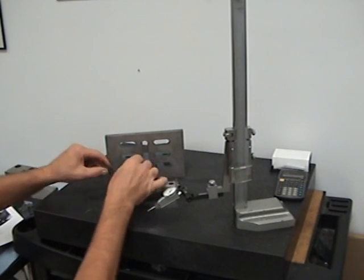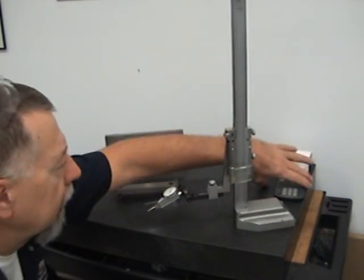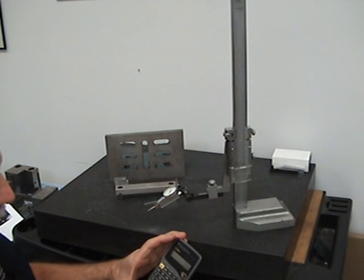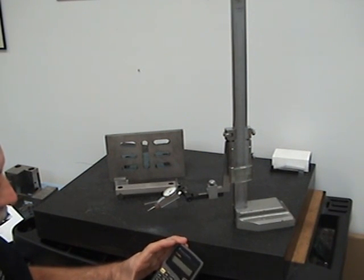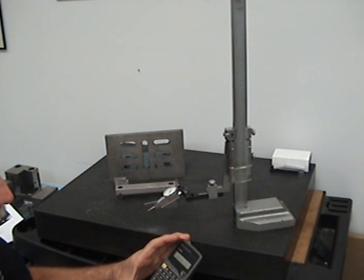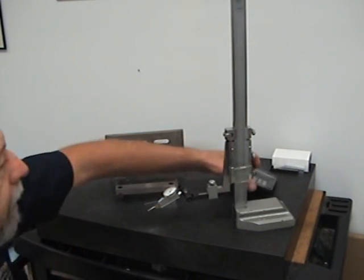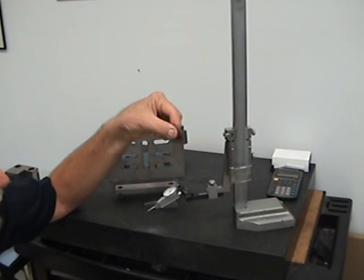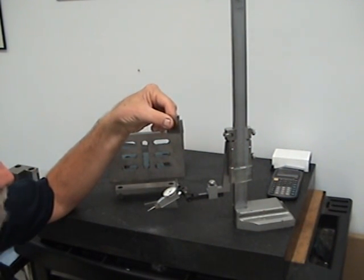So we use our angle plate and do our math calculations. We calculate that we need—we have a 5-inch sine bar times 15-degree angle, hit the sine key, equals 1.2941. So the size of the gauge block stack that we need is 1.2941.